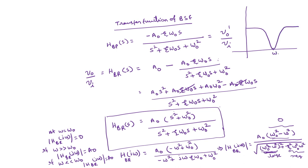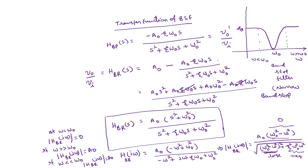So plotting the response: at ω0 the gain is 0; for frequencies both greater than and less than ω0 the gain is A0. This is the band stop filter response. For a narrow band stop filter, the bandwidth is very small — defined at 1/√2 times the peak — with frequencies ωL and ωH. The narrow band stop filter is also called a notch filter.